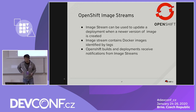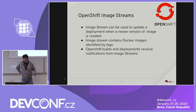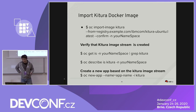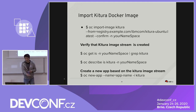Talking about ImageStream: it can be used to update a deployment when a newer version of the image is created. ImageStream creates a Docker image identified by tag. OpenShift can build and deploy services and receive notifications from ImageStream. You can also do OC import-image, specify the Kitura ImageStream, and after importing it into your OpenShift namespace, create the app using the OC new-app command and specify dash-i for the Kitura ImageStream.